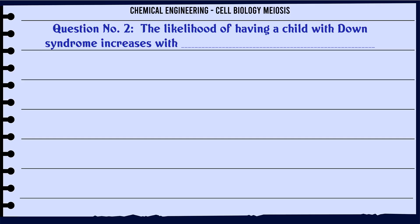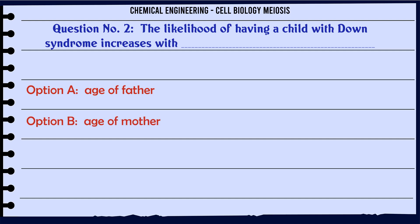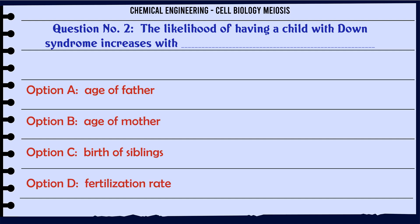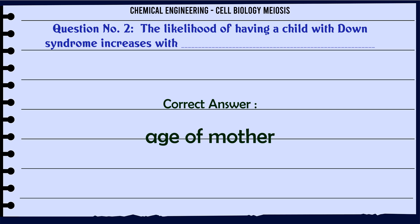The likelihood of having a child with Down syndrome increases with: A. Age of father. B. Age of mother. C. Birth of siblings. D. Fertilization rate. The correct answer is Age of mother.